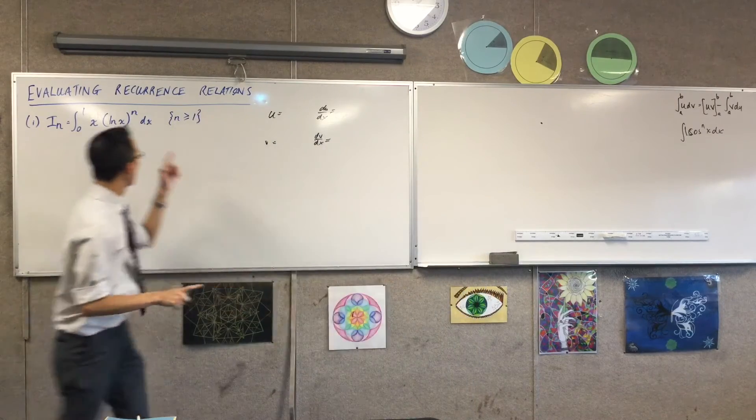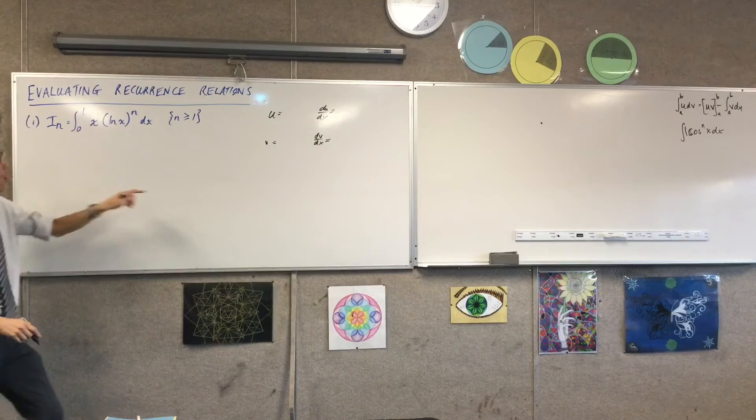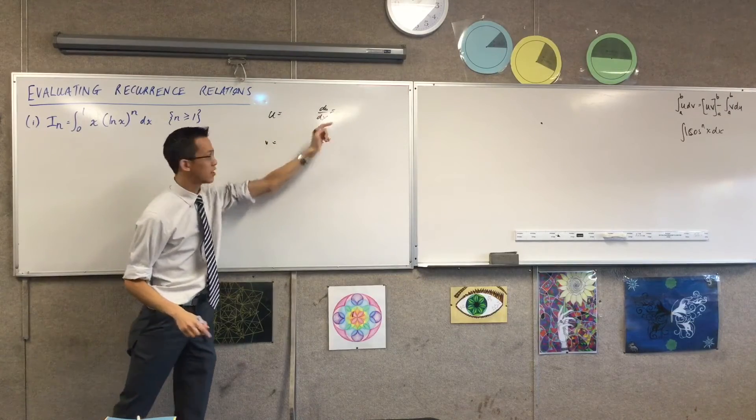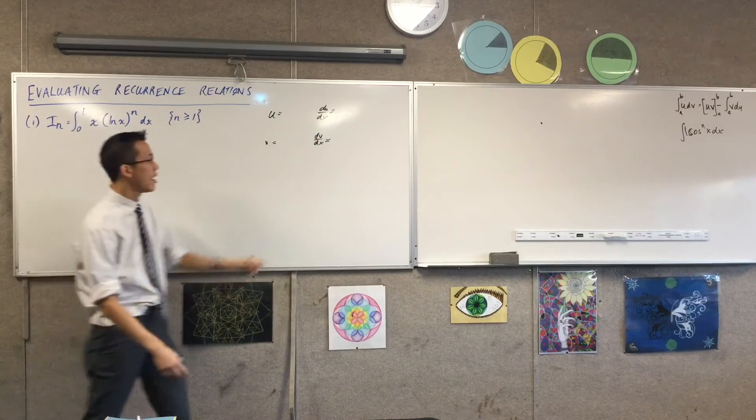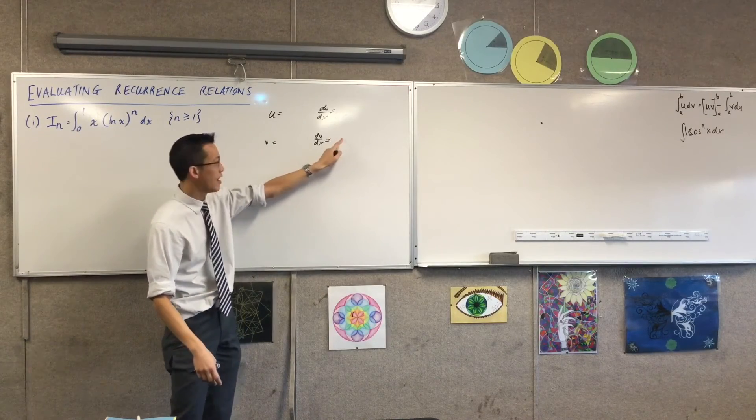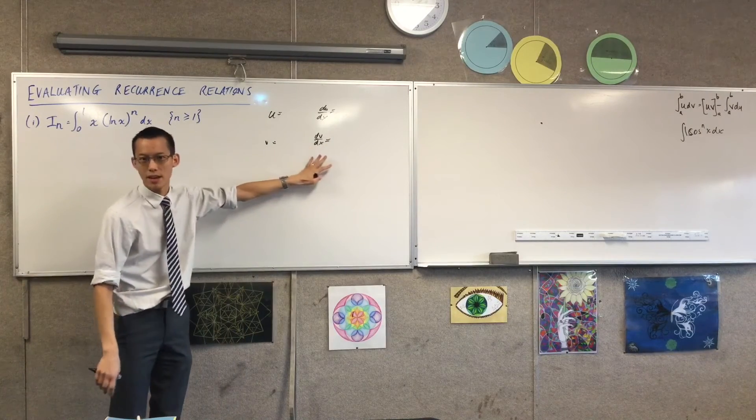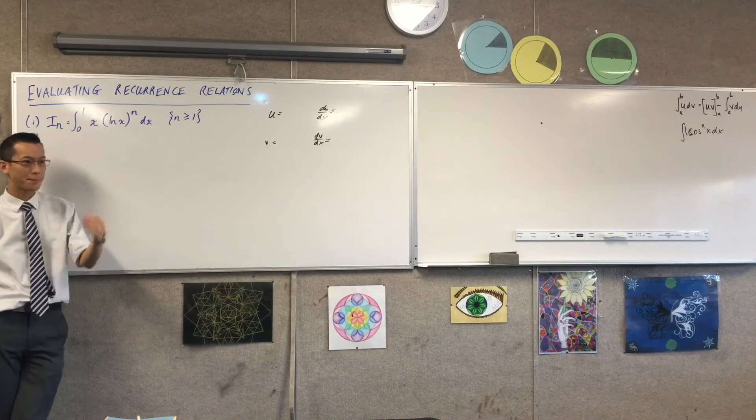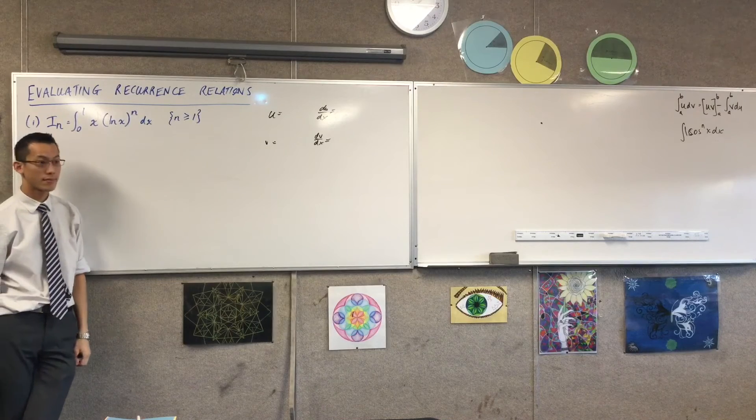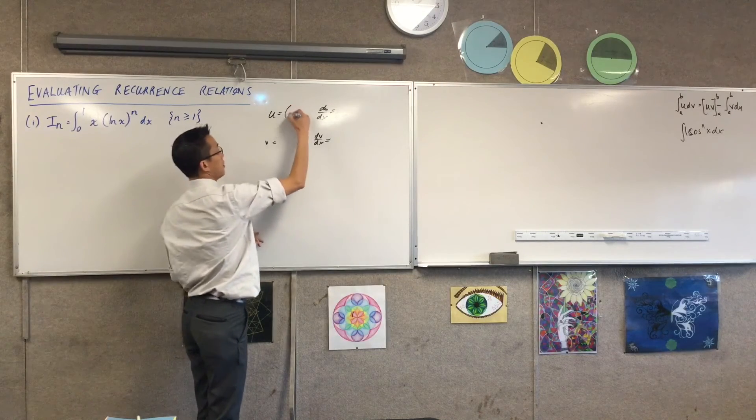Now remembering that when we select the pieces, one of them gets differentiated and so hopefully that's the part that gets successively better, and that's why there's a recurrence relation, and then there's the part that gets integrated and you don't want to cause like a disaster there. So which of these do you think is the one that you want to differentiate, and which is the one you want to integrate?